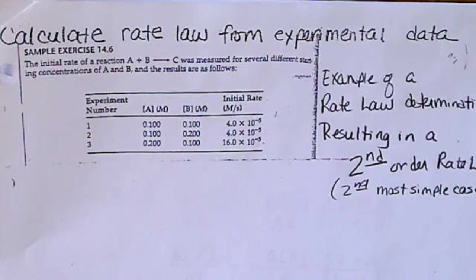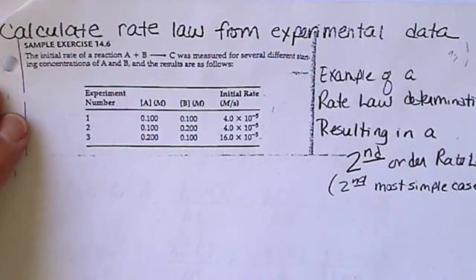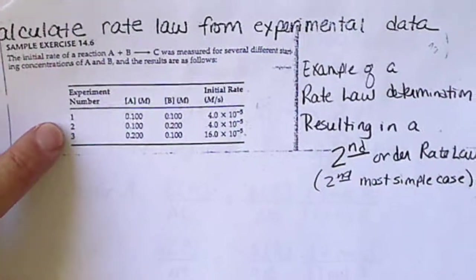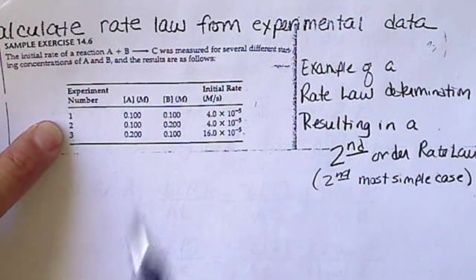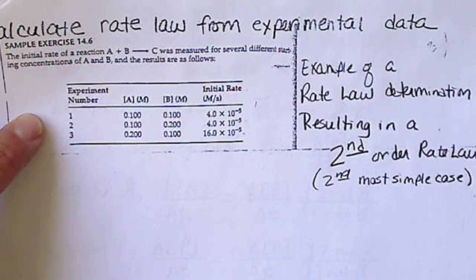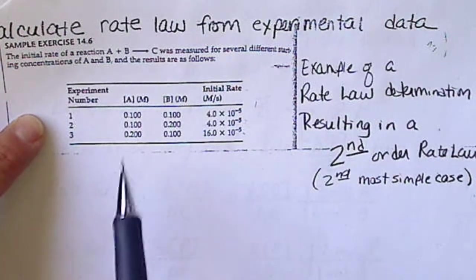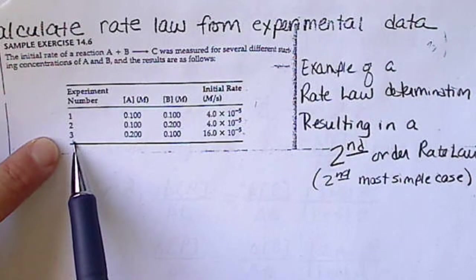This is going to be an example of calculating a rate law from experimental data. Whenever we calculate a rate law, we have to do it experimentally, and we have to have at least three experiments.